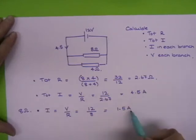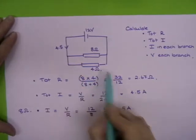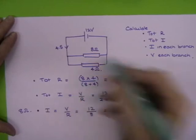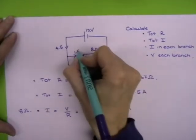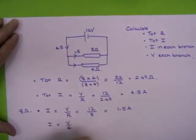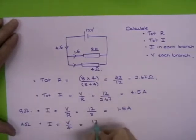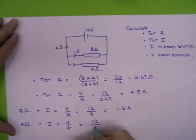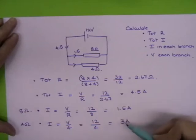So obviously the other branch, which is the 4 ohm branch, if there's 1.5 amps being used here, then there must be 3 left down here. But we'll just check that. I equals V over R. This is for the 4 ohm resistor. That's equal to 12 divided by 4, and that's giving you an answer of 3 amps. So that's correct.